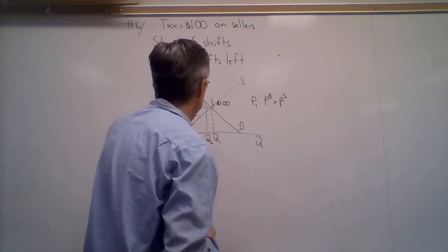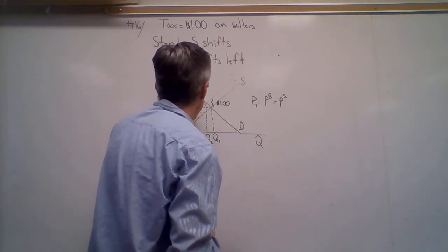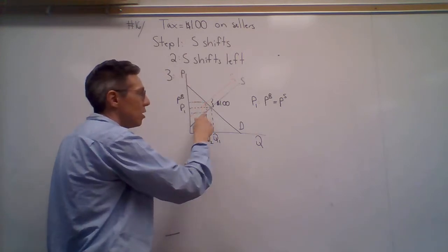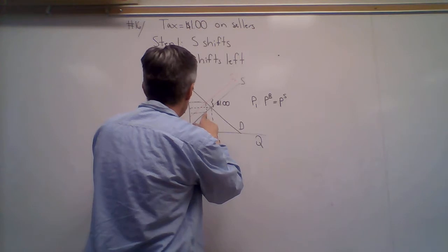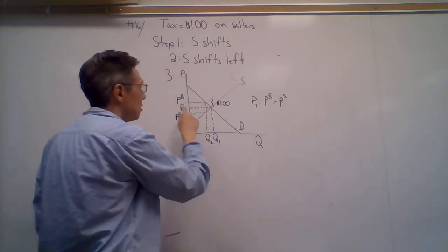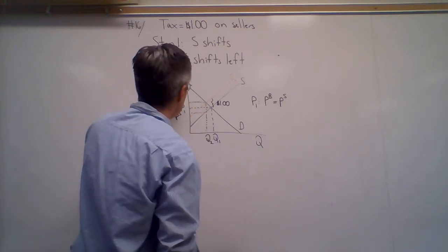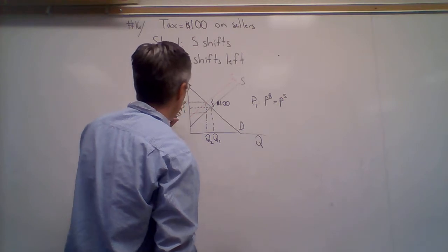Price sellers receive, using this quantity, is where it hits the supply curve. So this is the price buyers pay under the tax.